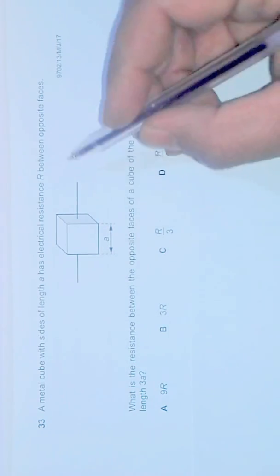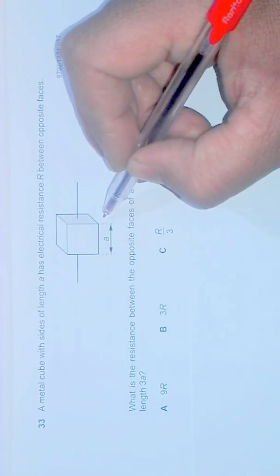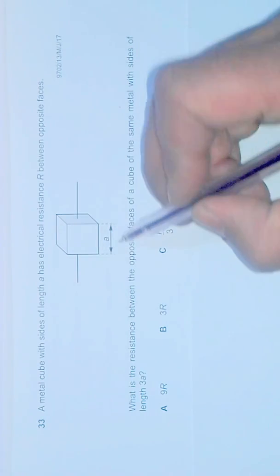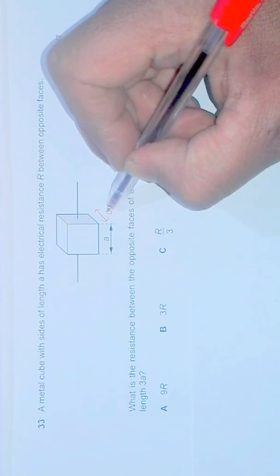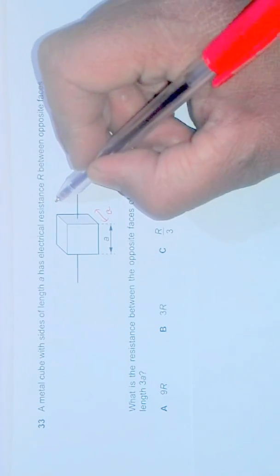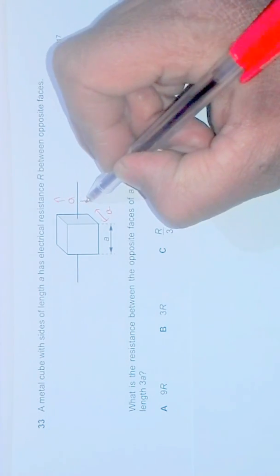We have a metal cube which means that all the sides are equal. So since this side is A, this side should also be equal to A and its height should also be equal to A.